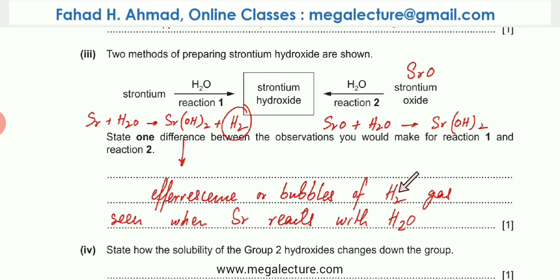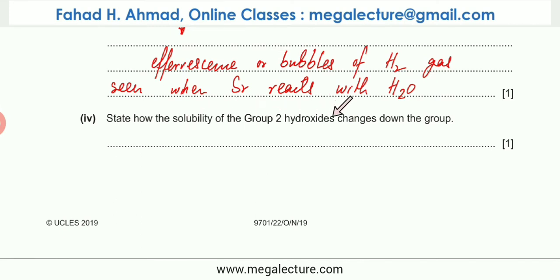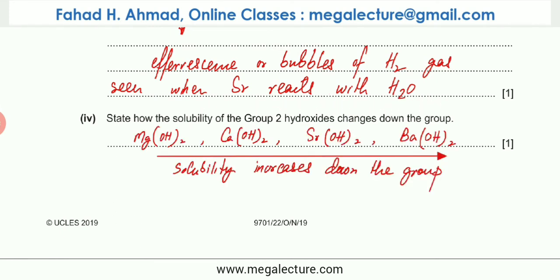State how the solubility of the Group 2 hydroxides changes down the group. To answer this part you should know the solubility of hydroxide increases down the group. Magnesium hydroxide is pretty much insoluble, calcium hydroxide is partially soluble, strontium hydroxide and barium hydroxide are pretty much soluble. Solubility increases down the group.